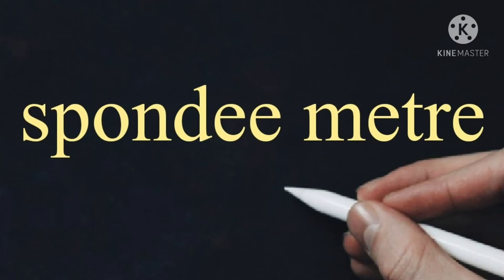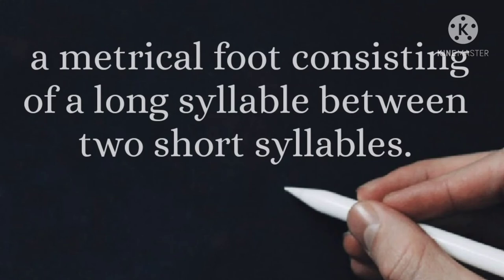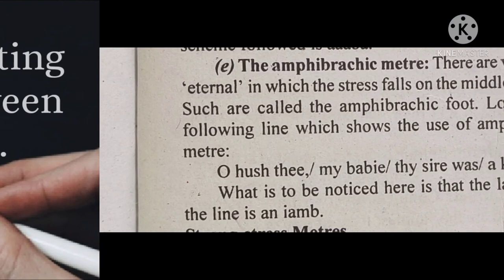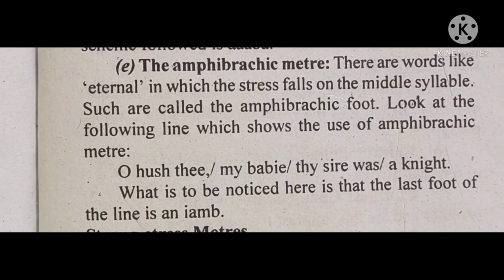Now moving on to the last one: Amphibrachic meter. Amphibrachic is a metrical foot consisting of a long syllable between two short syllables — first short, then long, and last short. Words like 'eternal' have stress falling on the middle syllable and are called the Amphibrachic foot. Look at the following lines: 'O hush thee my baby' and 'thy sire was a knight.' Except the last one, which is in Iambic meter — first unstressed then stressed — all of them are Amphibrachic meter, because the pattern is first short, then long, and last short.